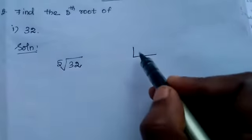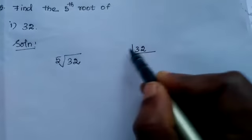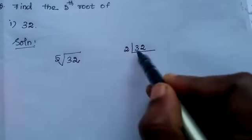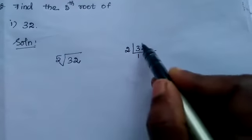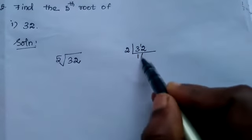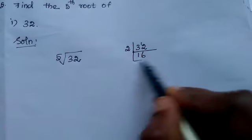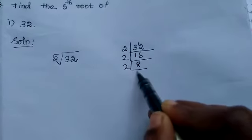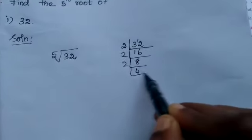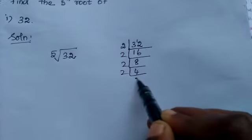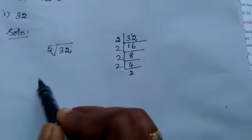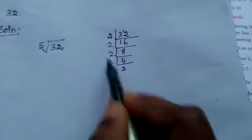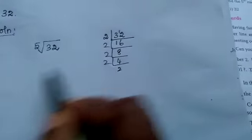Now we want to find the prime factorization for 32. Divide by 2: 16, again 2: 8, again 2: 4, again 2: 2, again 2: 1. So how many times 2? That gives us 2 to the power 5.